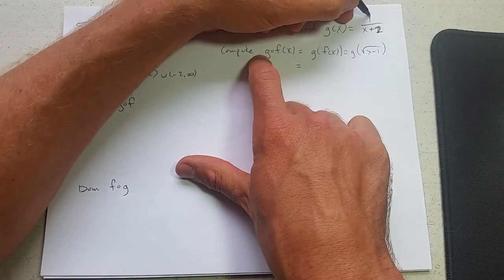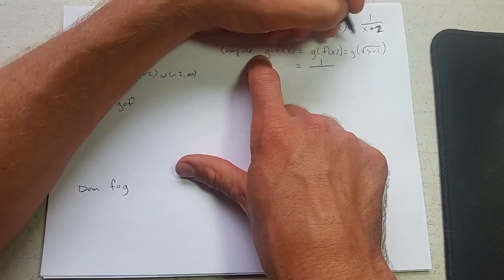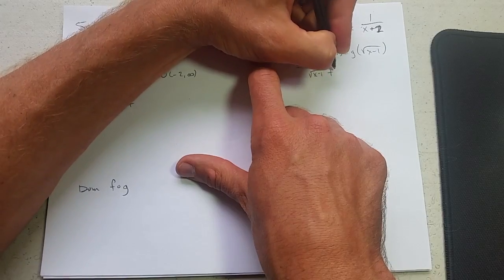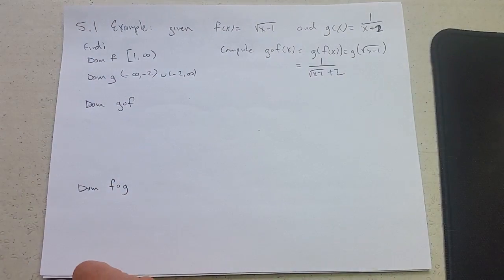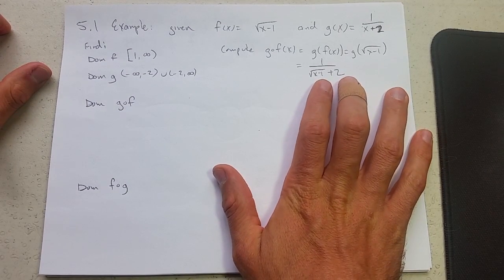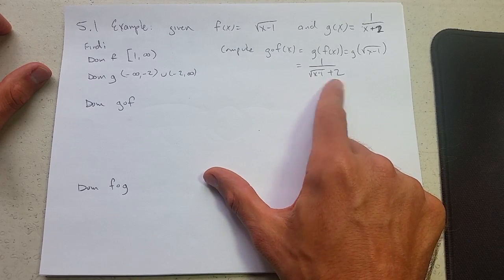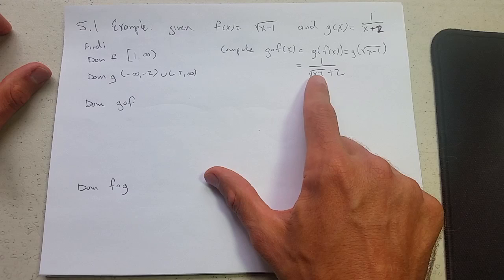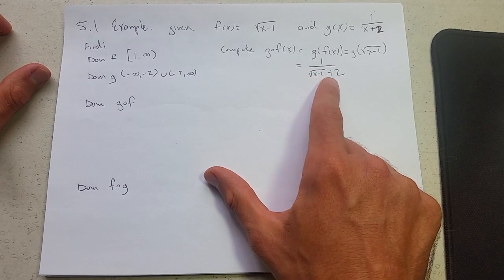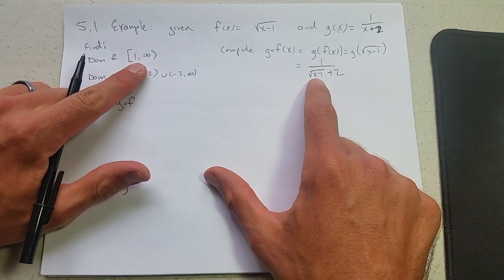What does g do to this? Right here is where the input goes. So it's going to be 1 over square root x minus 1 plus 2. In this form, if you do not simplify any further, you can get the domain right out of here. We still have a square root, so it still has the property that it must be 0 or greater, which we take care of right here. It's the domain of f.